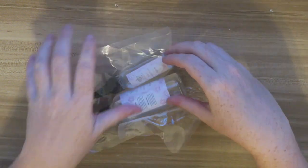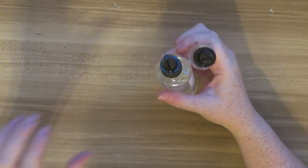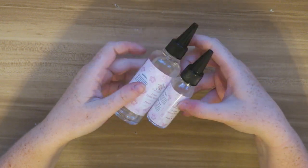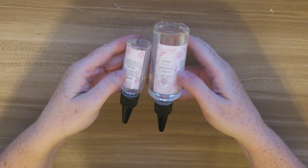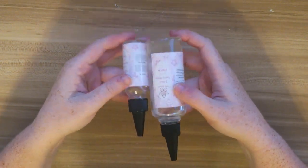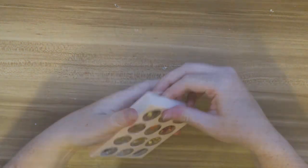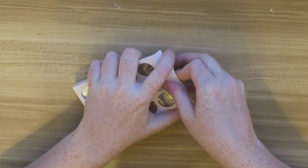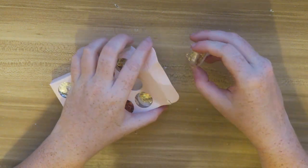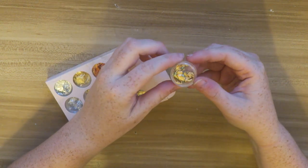Next we have our two-part resin, and this is a three to one ratio which is better for deeper projects. It's a bit more of a watery consistency than a one to one ratio. Then we have this set of foils. There are four different colors and three of each.